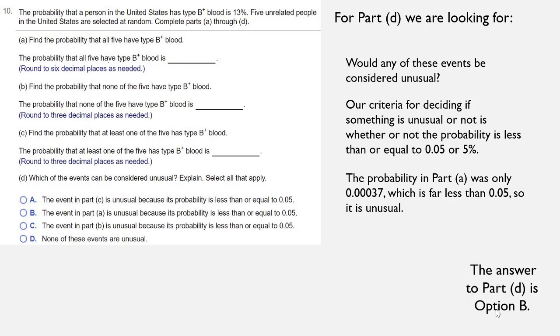So our correct answer here for part D is option B, which says the event in part A is unusual because its probability is less than or equal to 0.05. And that's number 10.